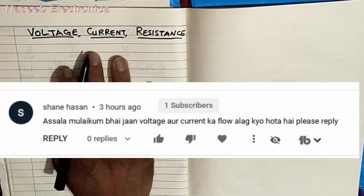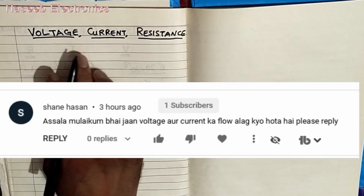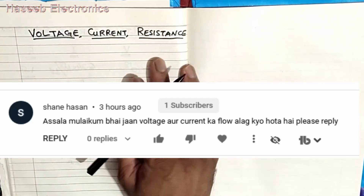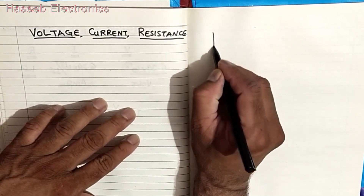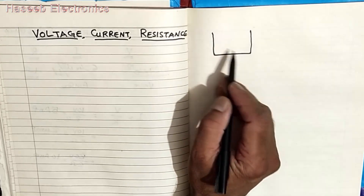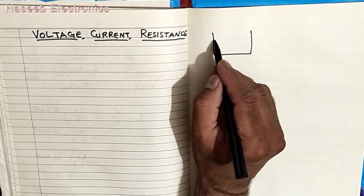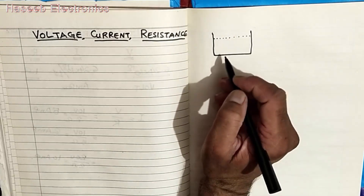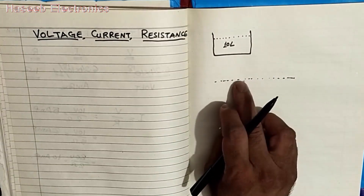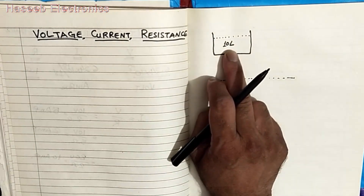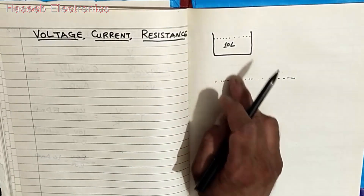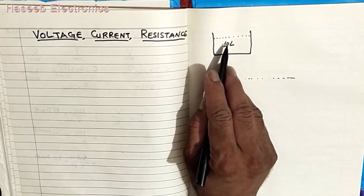Basically this is a requested video — a question from one of my viewers about why current and voltage flow in different ways. To understand voltage and current, let me explain with an example. I have a water tank. A water tank means it is a storage — we can store something, for example 10 liters of water. The tank has some height from the ground level — for example 10 meters or 5 meters above ground. It has some potential.